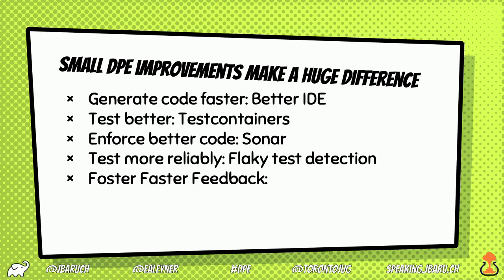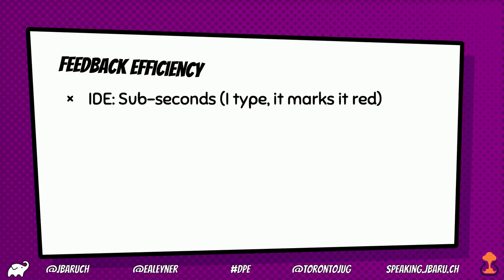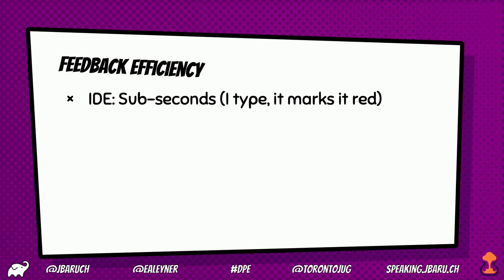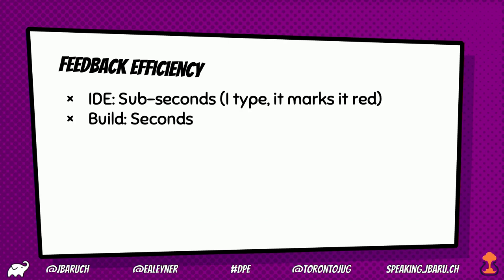Faster feedback is one of the most important things. Let's talk about feedback efficiency — you experience it every day. When you type code in your IDE and it highlights red, that's sub-second feedback: you missed a character or forgot a semicolon. A build, you want very close to that. Realistically, who has a build that takes only seconds? Most of us are around 10 minutes. More than 10 minutes and we need to work on that. And then CI and production feedback is hours, days, months.